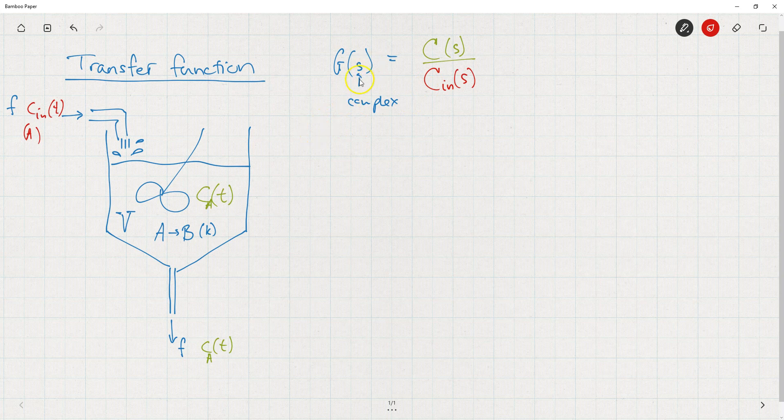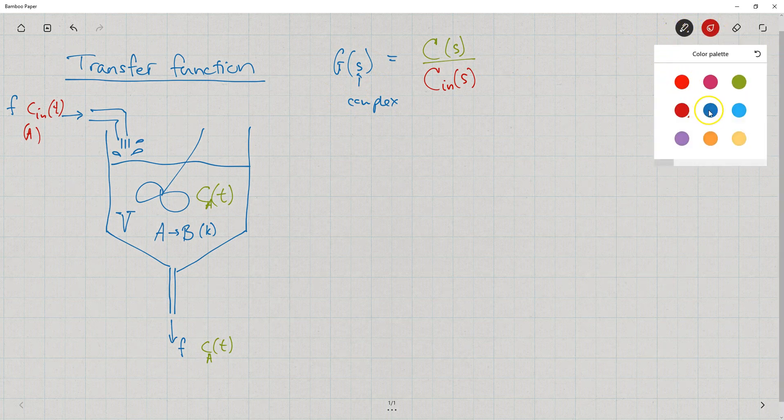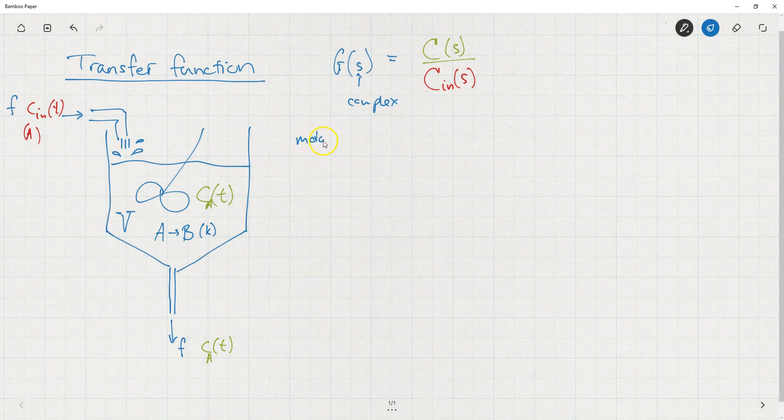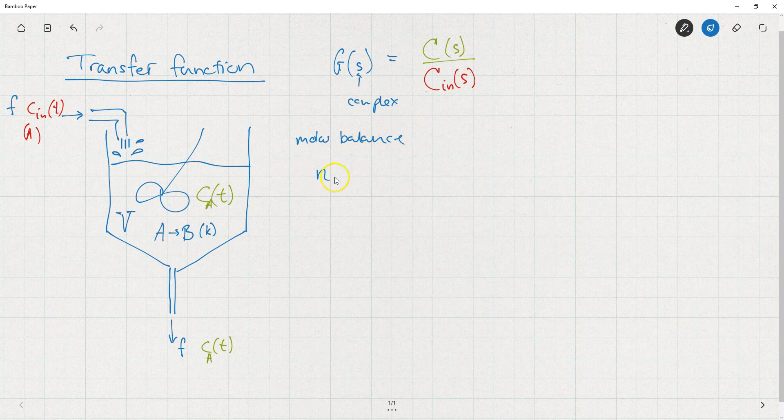Let's see how we can find this transfer function. We start out by just writing an ordinary molar balance here. We have some amount of substance entering the system per time unit, amount of substance generated per time unit, accumulated substance per time unit, and then something that leaves the tank per time unit.